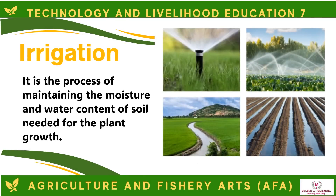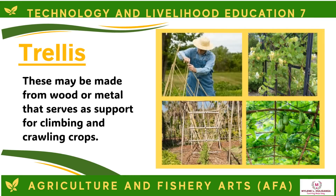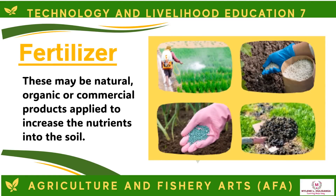Irrigation is the process of maintaining the moisture and water content of soil needed for plant growth. Trellis may be made from wood or metal and serves as support for climbing and crawling crops. Fertilizers may be natural, organic, or commercial products applied to increase nutrients into the soil.